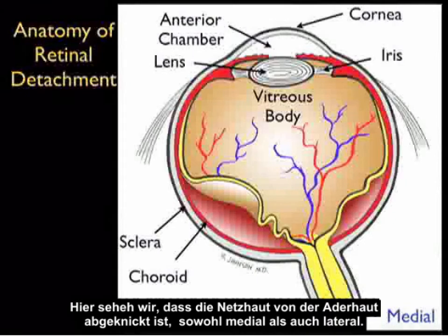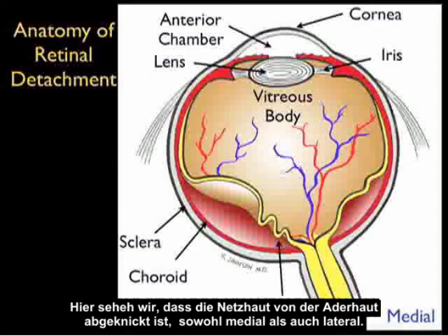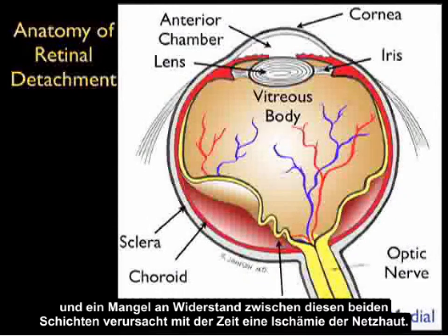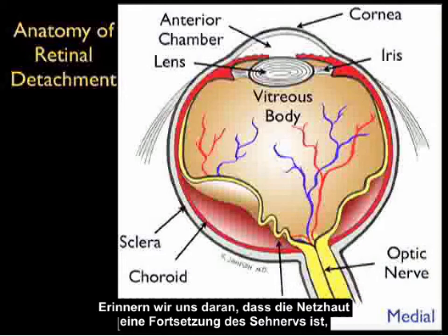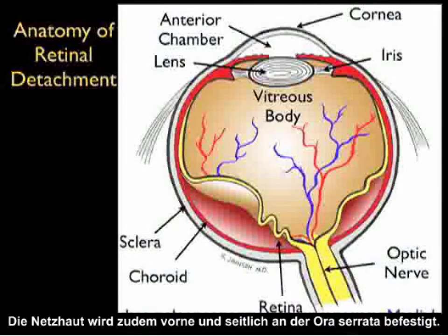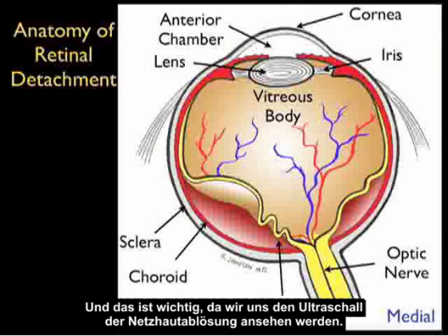The retina has buckled away from the choroid both medially and laterally. This is a very bad thing because the blood supply to the retina exists through the choroid, and the lack of opposition of these two layers will cause ischemia of the retina with time. The retina is a continuation of the optic nerve, so it will always be tethered at the optic nerve, and also attached anteriorly and laterally at the ora serrata.